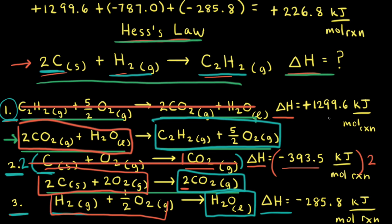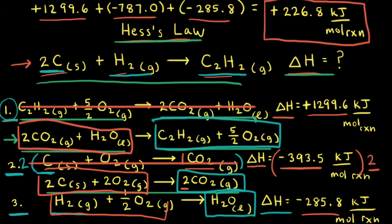Looking at the enthalpy changes for each step: the first equation gives positive 1299.6 kJ/mol; the second equation gives negative 393.5 times two, which is negative 787 kJ/mol; and the third equation gives negative 285.8 kJ/mol. When we add everything together, we get positive 226.8 kilojoules per mole of reaction. So for the formation of one mole of acetylene from two moles of carbon and one mole of hydrogen, the change in enthalpy is positive 226.8 kilojoules per mole of reaction.